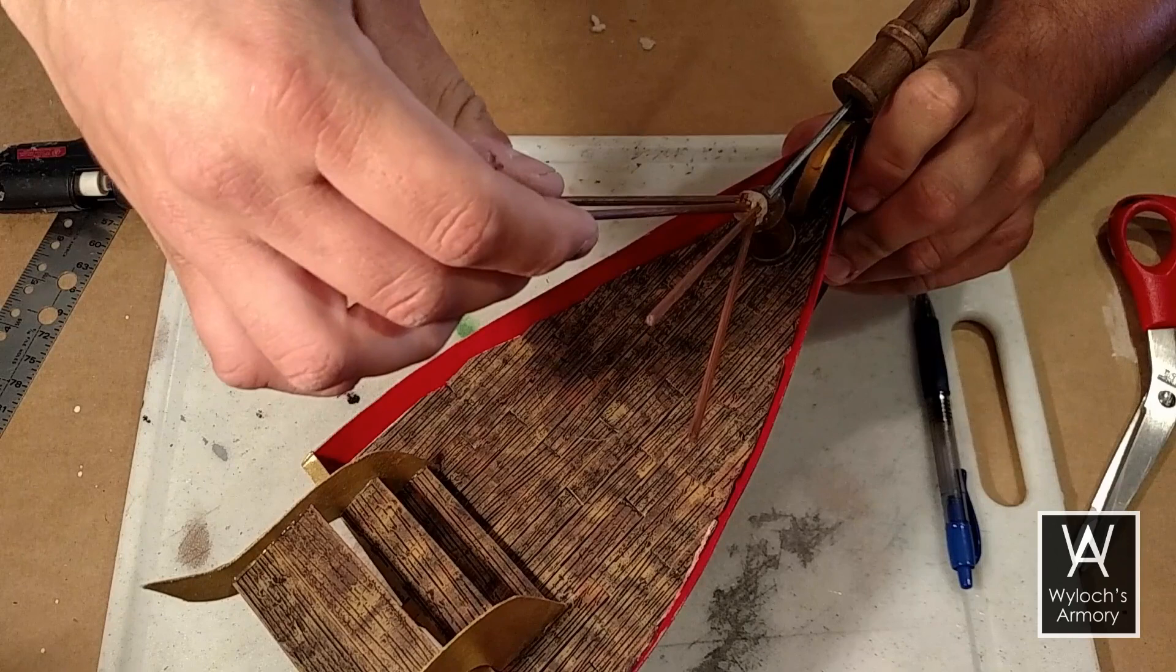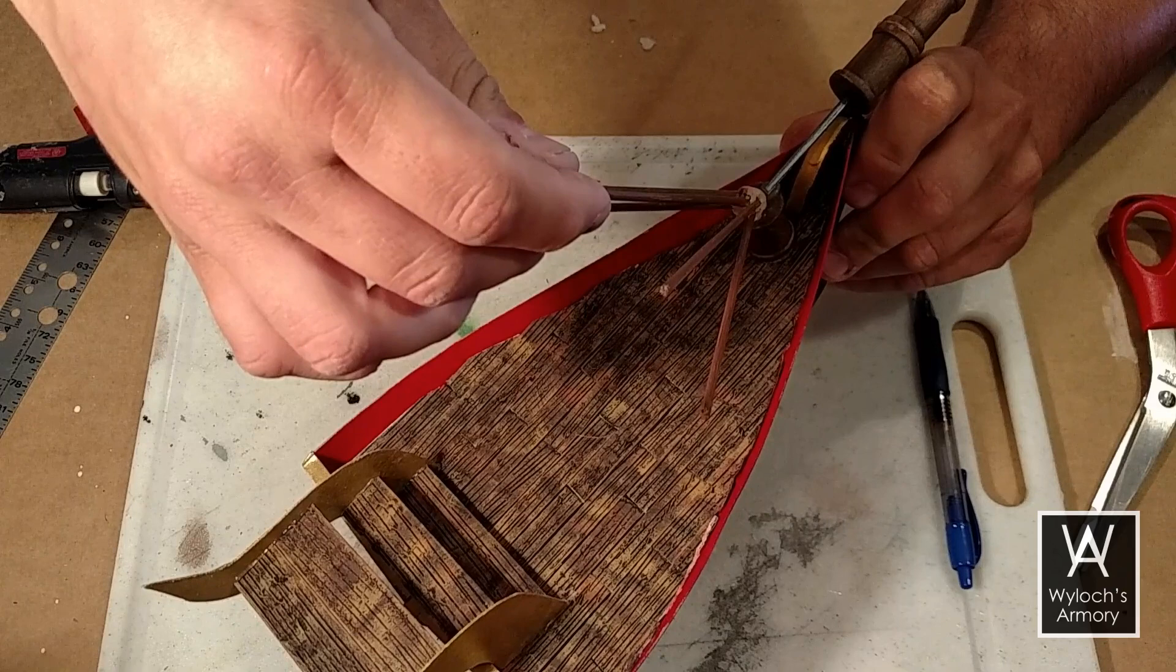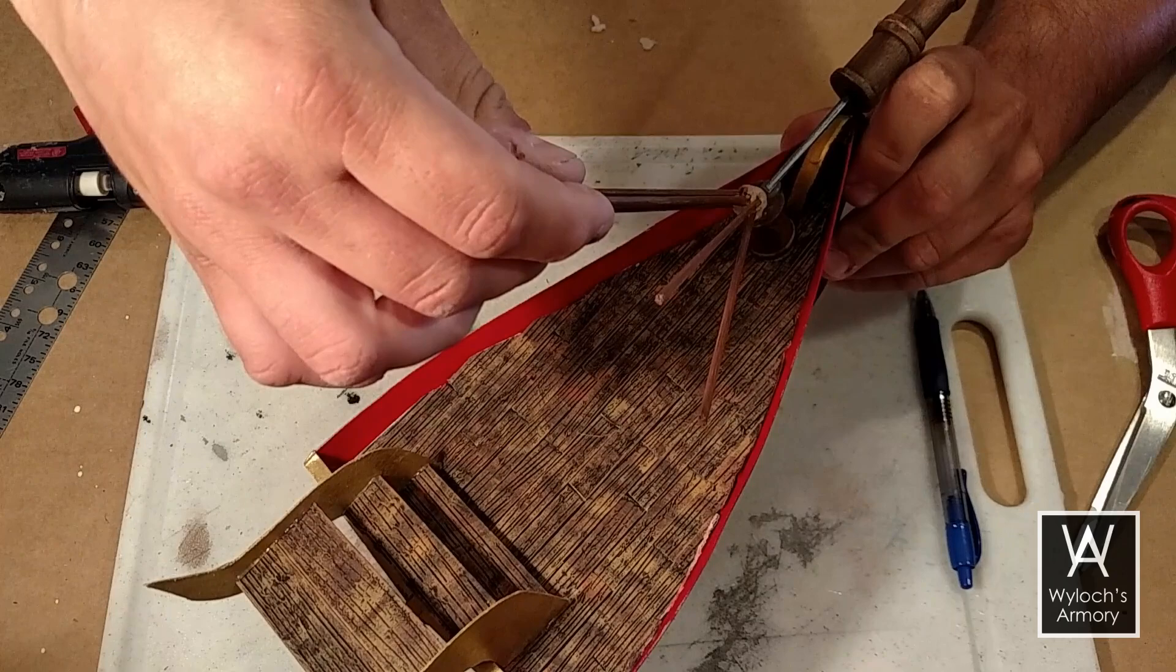And at the same time, make sure you pay attention to the alignment, meaning make sure that it's straight. An easy way to do that is to look at the center post and make sure that it's parallel with the deck boards.